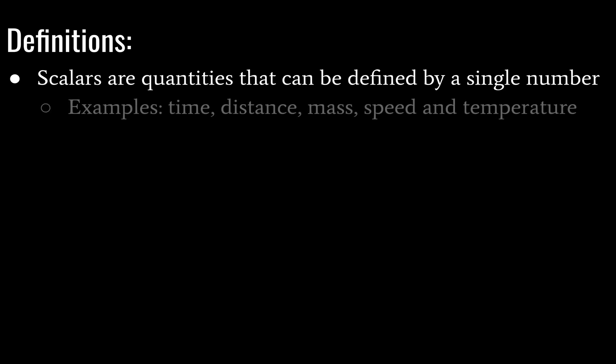Okay, so let's jump into some definitions. First, scalars are quantities that can be defined by a single number. Some examples of that would be time, distance, mass, speed, and temperature. All you need is the quantity and that's it.